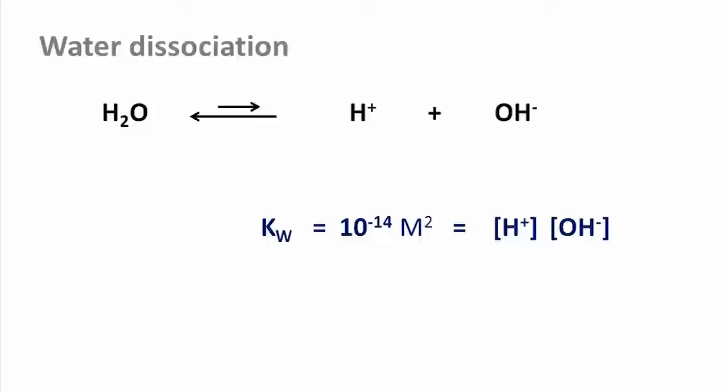Because the dissociation of water produces exactly one of these ions each, their concentration must be the same. That concentration must accordingly be 10 to the minus 7 molar for each ion.